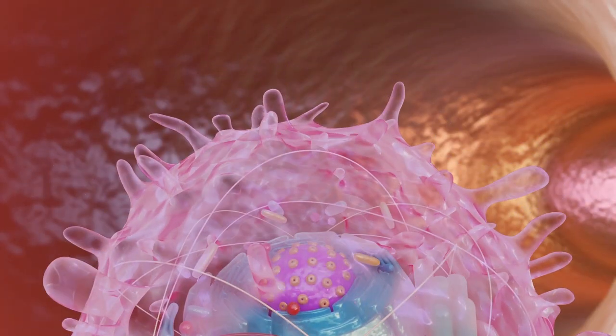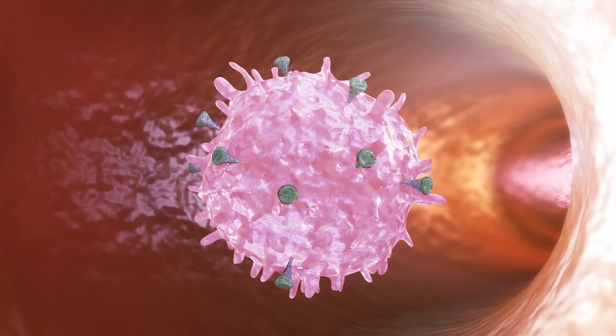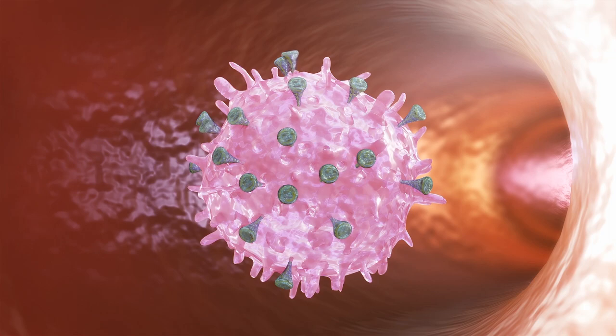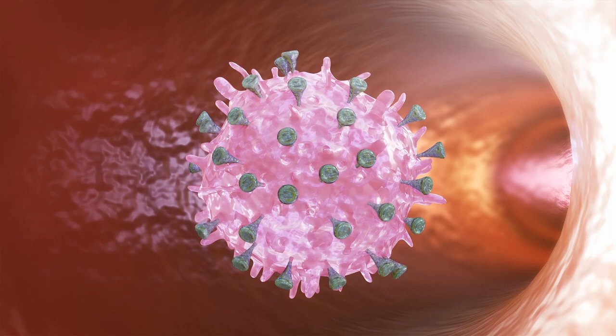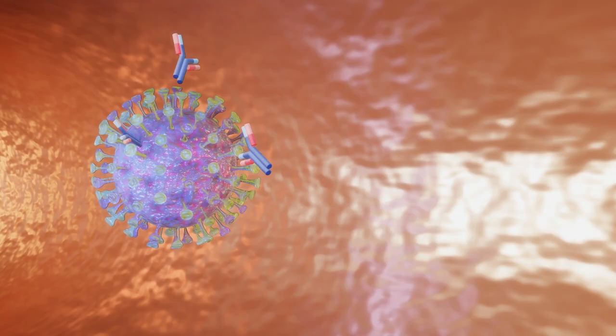Once the vector delivers this genetic code to a cell, it causes the cell to produce spike proteins. These spike proteins are harmless on their own, but they trigger the body to mount an immune response.